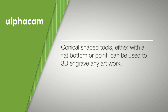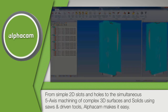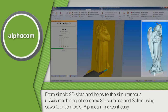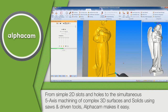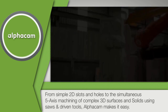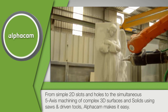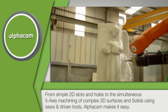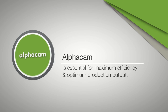can be used to 3D engrave any artwork. From simple 2D slots and holes to the simultaneous 5-axis machining of complex 3D surfaces and solids using saws and driven tools, AlphaCam makes it easy. AlphaCam is essential for maximum efficiency and optimum production output.